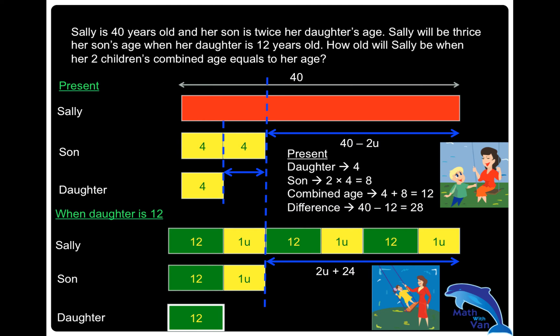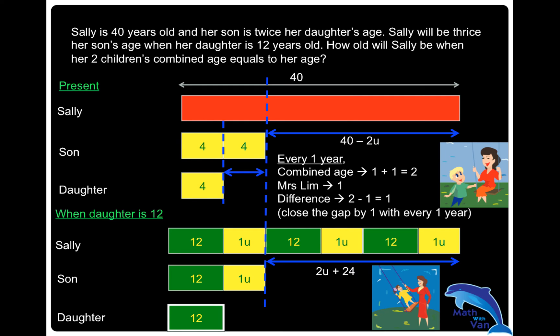So how old will Sally be when her two children's combined age equals her age? The answer will be 28 years later — just 40 plus 28. Why? Because for every one year, the combined age increases by two (son one year older, daughter one year older), while Sally increases by one. So the gap closes by one each year. To close a gap of 28, you need 28 years. So 28 years later, Sally's age will equal the combined age of her children. Sally will be 68 years old.